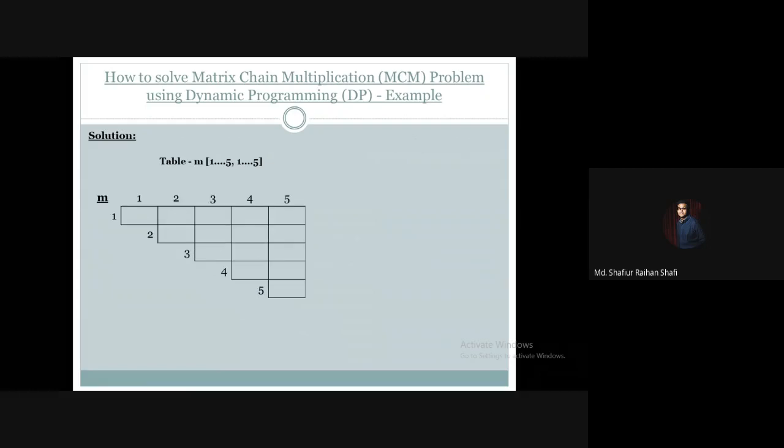We have the M table, which is an N×N matrix. Since the chain has 5 matrices, the M table is 5×5. We also have the S table for tracking the optimal splitting pointer. The M table has row and column numbering 1 to 5. The S table has dimensions (n-1)×(n-1), with row numbering 1 to 4 and column numbering 2 to 5.